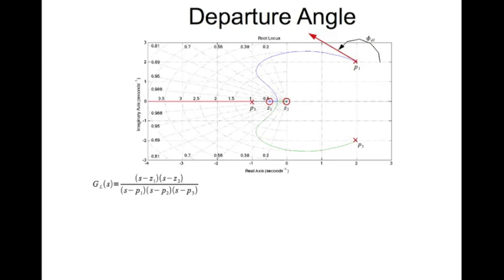So in this case we are interested in looking at the departure angle at P1. This system has three poles P1, P2 and P3 and two zeros Z1 and Z2.